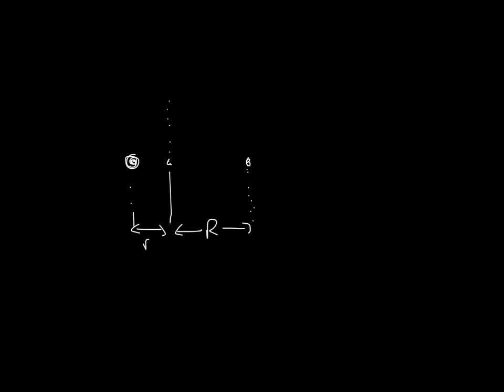And I call this mass little m, and I call this mass big M. It turns out the ratio of the distances is equal to the ratio of the masses, but it's an inverse proportion, where big R divided by little r is equal to big M divided by little m. Or another way to say that is that little m times big R is equal to big M times little r.